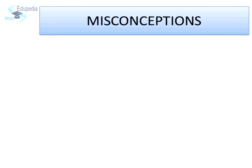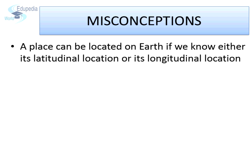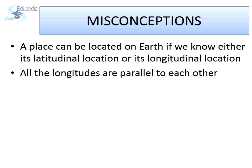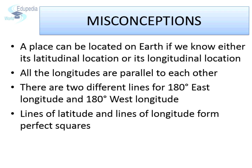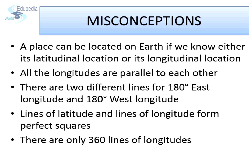Before we begin our exploration about the lines of longitude, let us look at some common misconceptions. Some people believe a place can be located on earth if we know either its latitudinal or longitudinal location alone. Some think all longitudes are parallel to each other like latitudes. Some believe there are two different lines for 180 degree east and 180 degree west. Others think lines of latitude and longitude form perfect squares, or that there are only 360 lines of longitude. All these are misconceptions, and during this session we will understand the real facts.